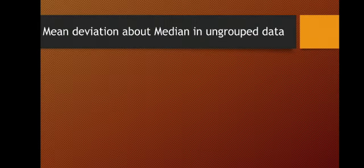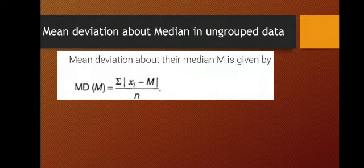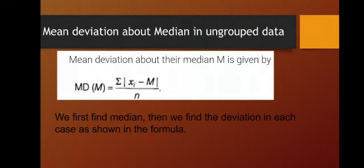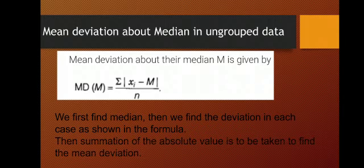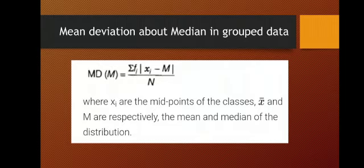Let us discuss how to find mean deviation about the median in grouped data. It is the same approach: first find the median, just as we found the mean in the earlier case. The change in the formula is that in place of (xi minus x-bar), we now have (xi minus m), where m is the median. For grouped data, the formula becomes summation of fi into mod of (xi minus m) upon summation of fi, because our target is to find mean deviation about the median.